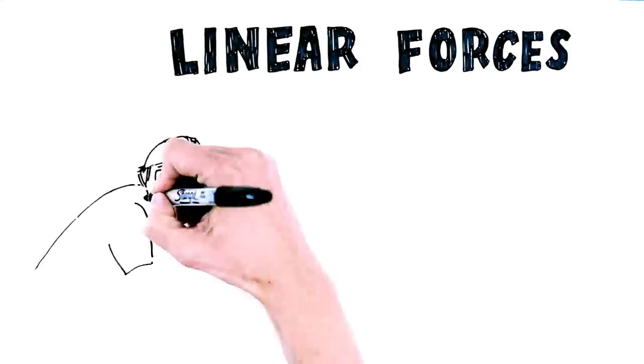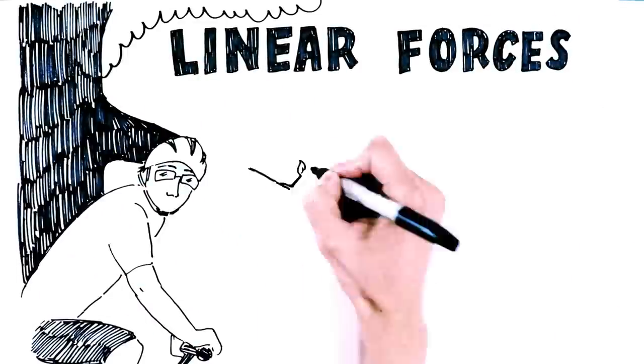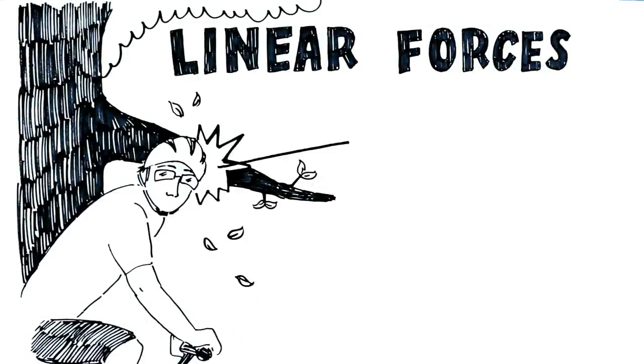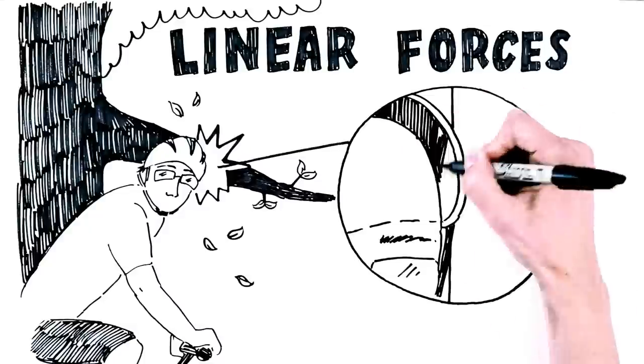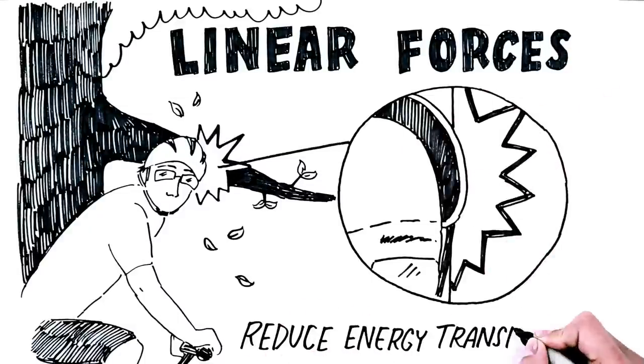Linear forces occur when your head is moving in a straight line and comes to a sudden stop. Typical helmets are equipped with liners that deform on these impacts and reduce the transfer of energy to the brain. Think of it like a type of second skull.